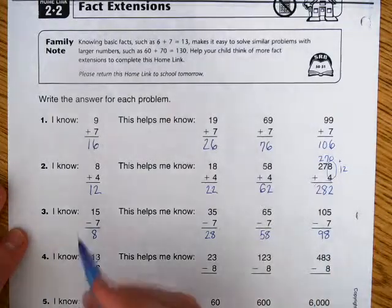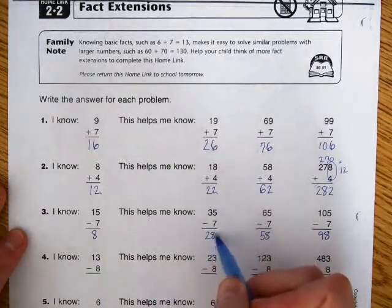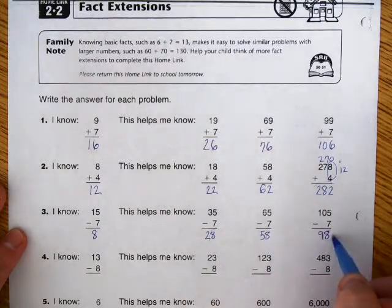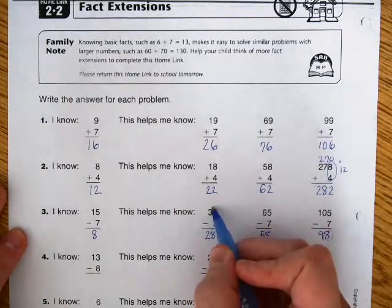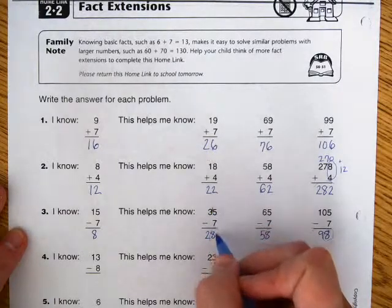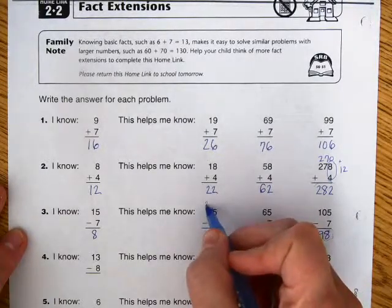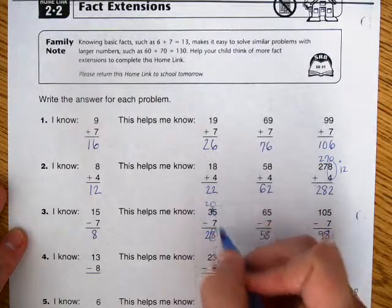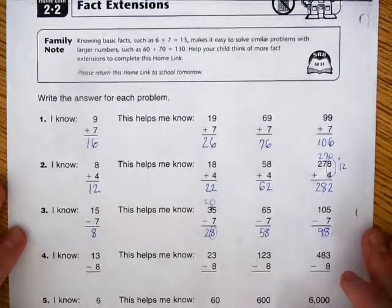So you know that this answer was going to end in an 8. And that it's like if you made this number to a 15, then you would have 15 minus 7 equaling 8, and what you would have left would be 20, and then you would have 28. That's how this kind of works.